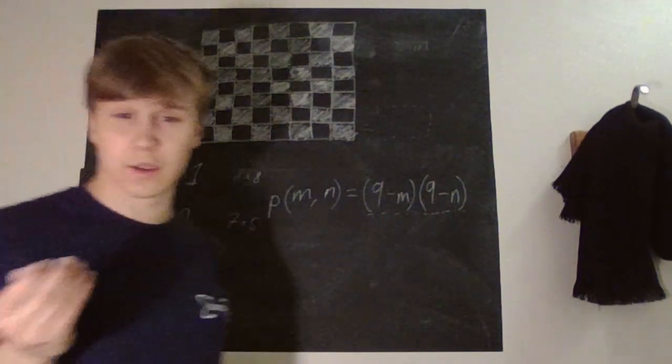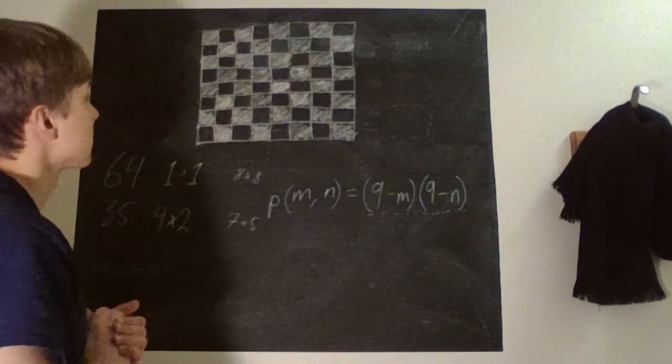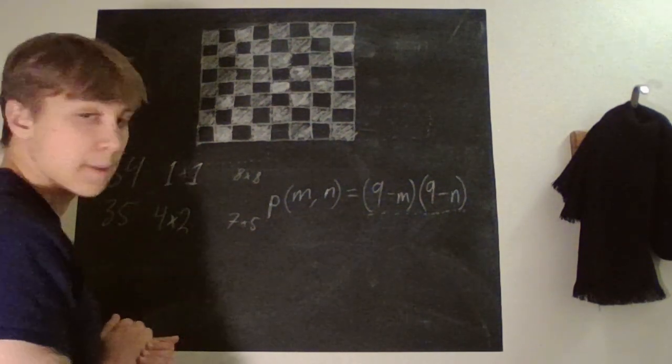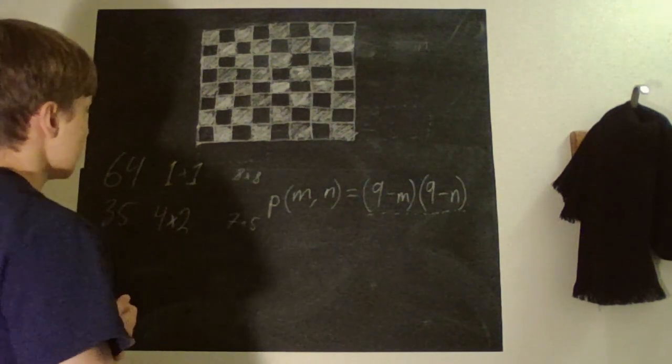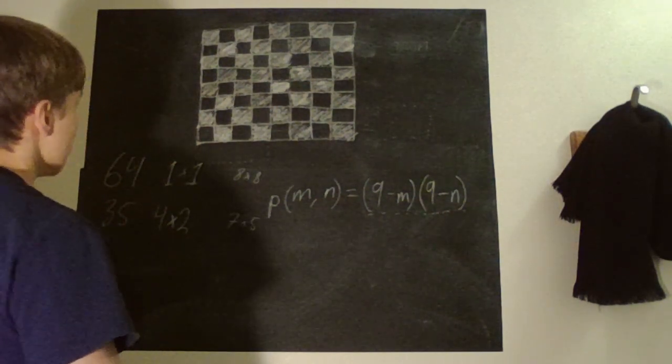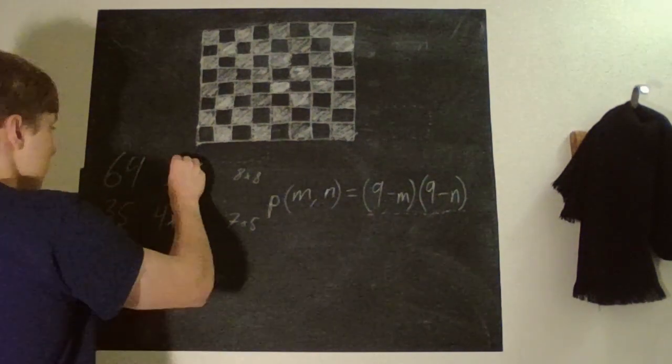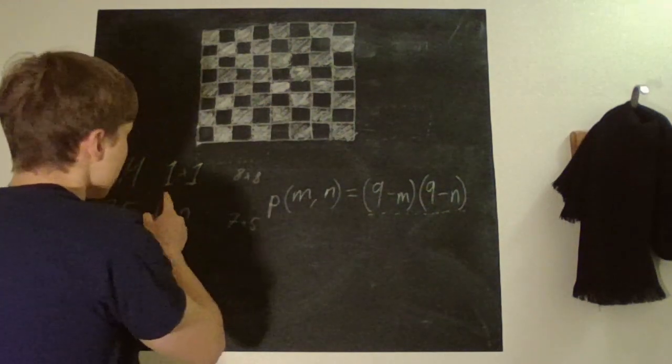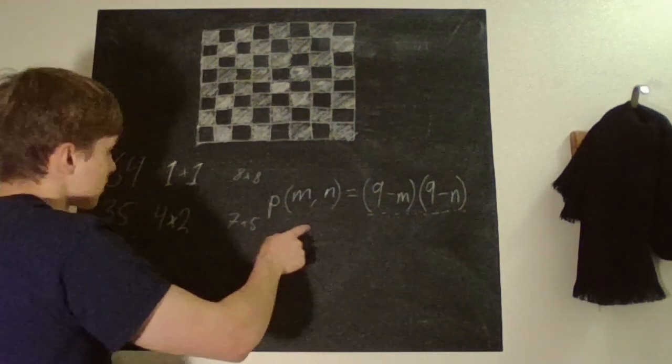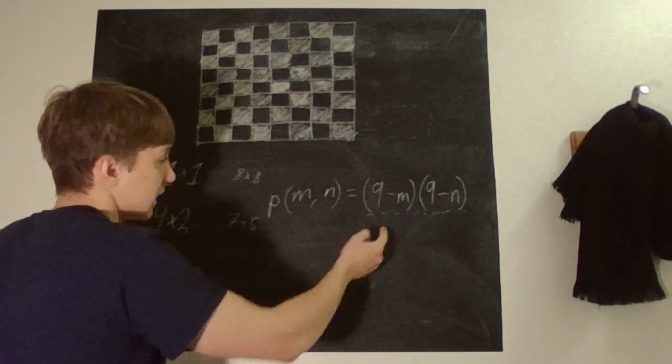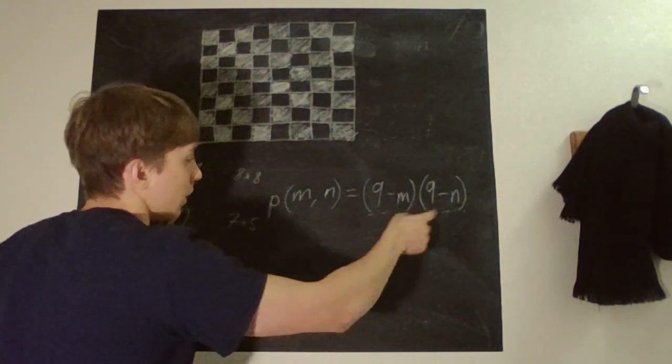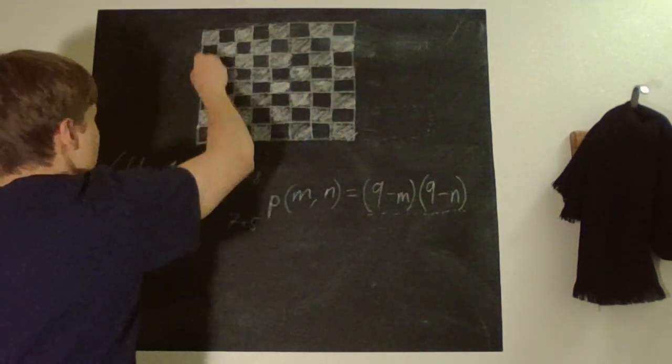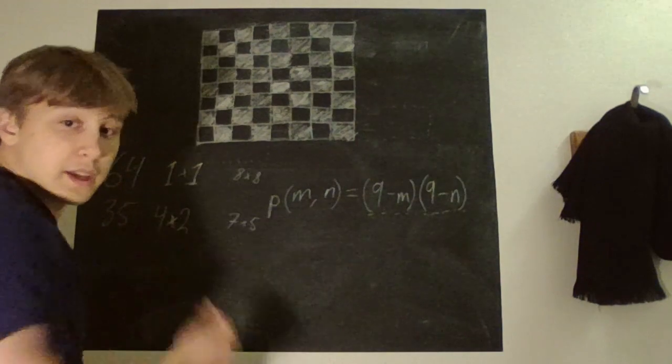So this is the formula for how many rectangles there are of the shape M and N. And then we just have to ask ourselves, how many shapes are there? Well, it isn't that hard to figure out. We have the smallest we can do is one by one. And the biggest we can do is eight by eight. And if we just plug this in here to check, if it would be eight by eight, then we have nine minus eight by one. So we have one way. And that is obviously the entire square. The entire board is the eight by eight shape.